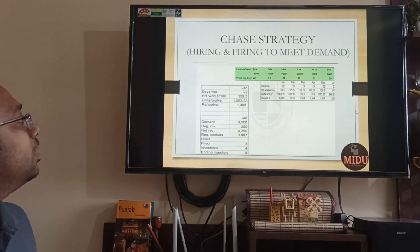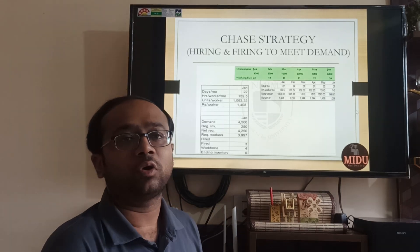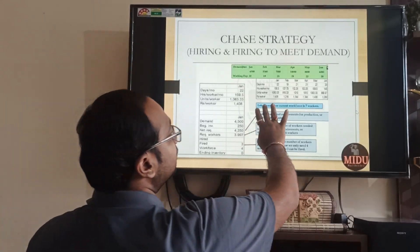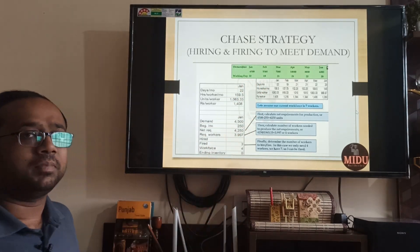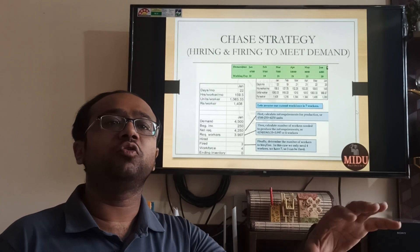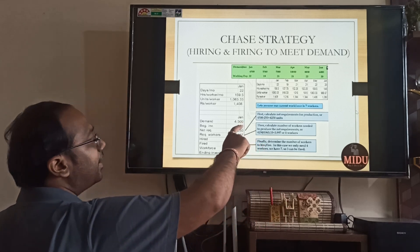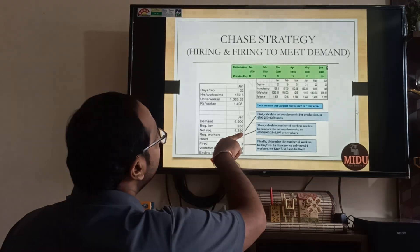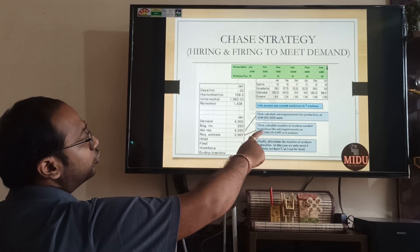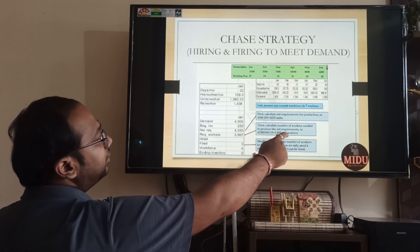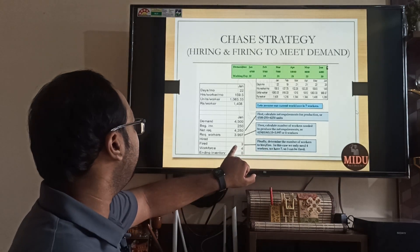The first question is: how much hiring and firing is required? We are asked to calculate the number of manpower. Assume your current workforce is 7 workers and demand is 4500. Beginning inventory may be 250 (not always 0, since December production leaves some leftover). Net requirement = demand minus beginning inventory = 4500 − 250 = 4250. Required workers = 4250 ÷ 1063 = 3.99 ≈ 4 workers. Workforce was 7 and you require 4, so 3 people can be fired.